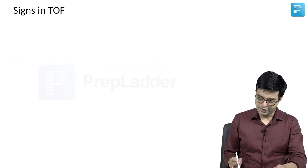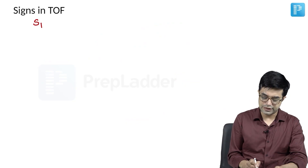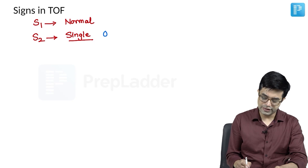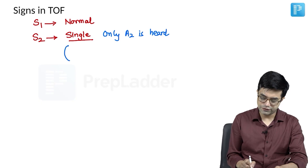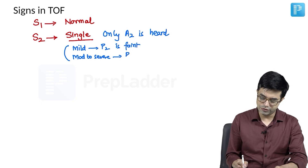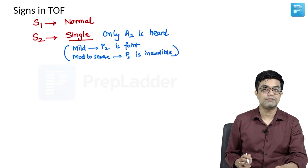Signs in Tetralogy of Fallot: S1, the first heart sound, will be found to be normal in most patients. The second heart sound is usually found to be single — only the A2 component is heard. In mild Tetralogy of Fallot, the P2 component is very faint and inaudible. In moderate to severe TOF, due to decreased pulmonary blood flow and decreased flow across the pulmonary valve, P2 is inaudible — so practically only A2 is heard.